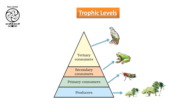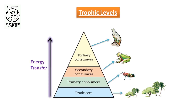Some higher carnivores can also become part of the food chain and can act upon the smaller carnivores, ultimately completing a food chain. In a food chain, the ultimate aim is to transfer the energy from the lower trophic level to the higher trophic level.